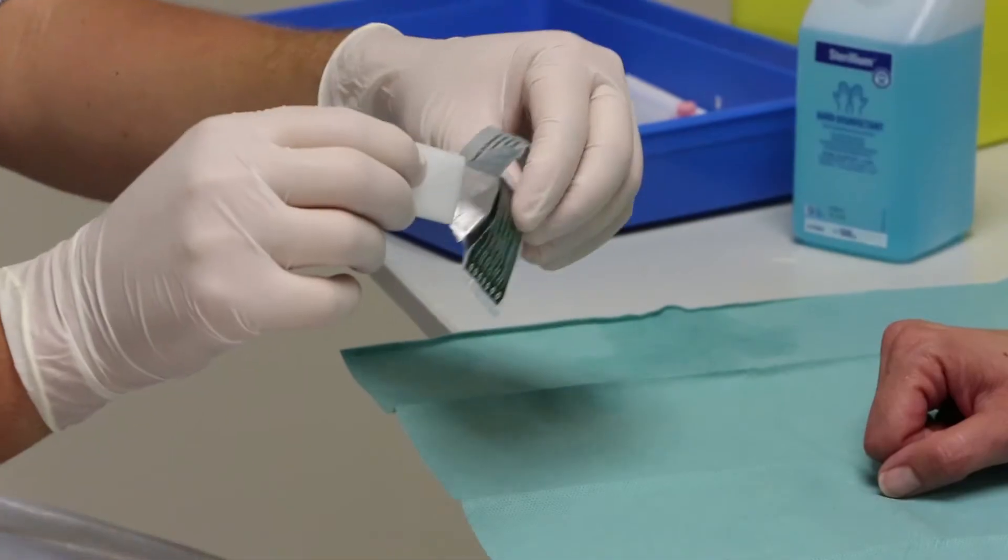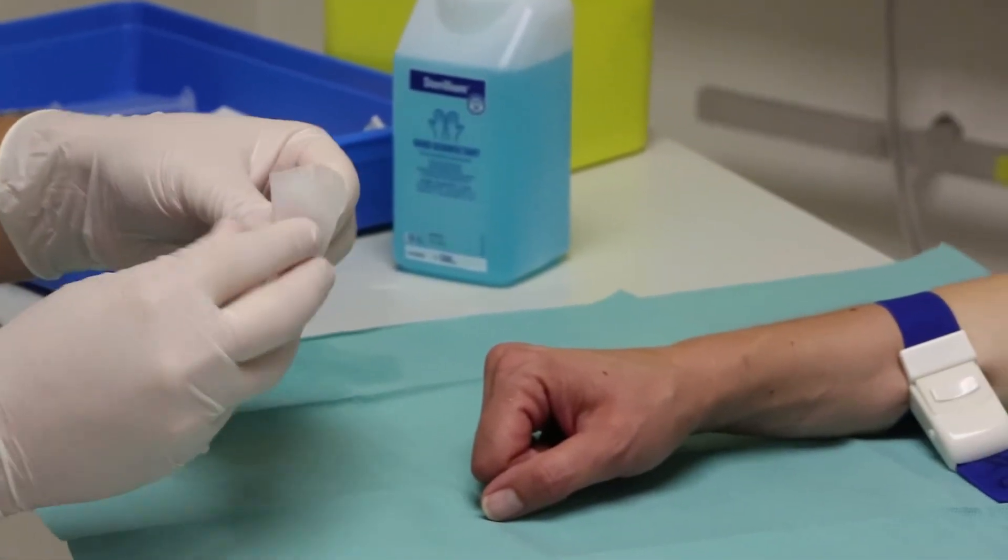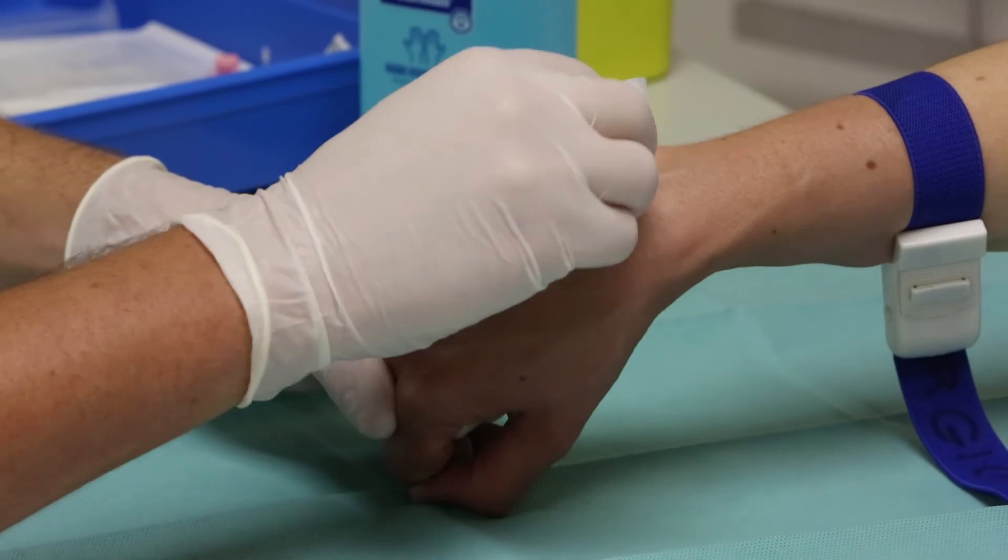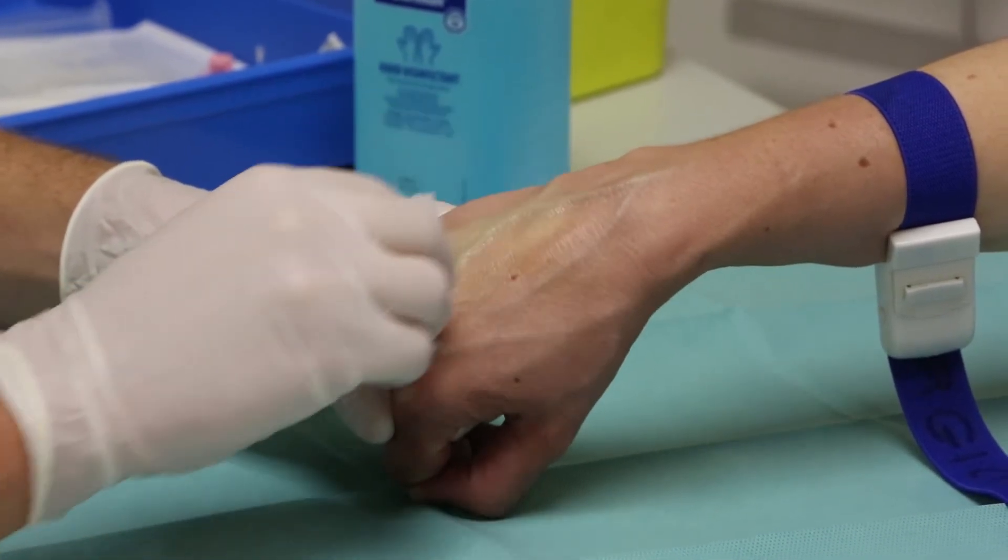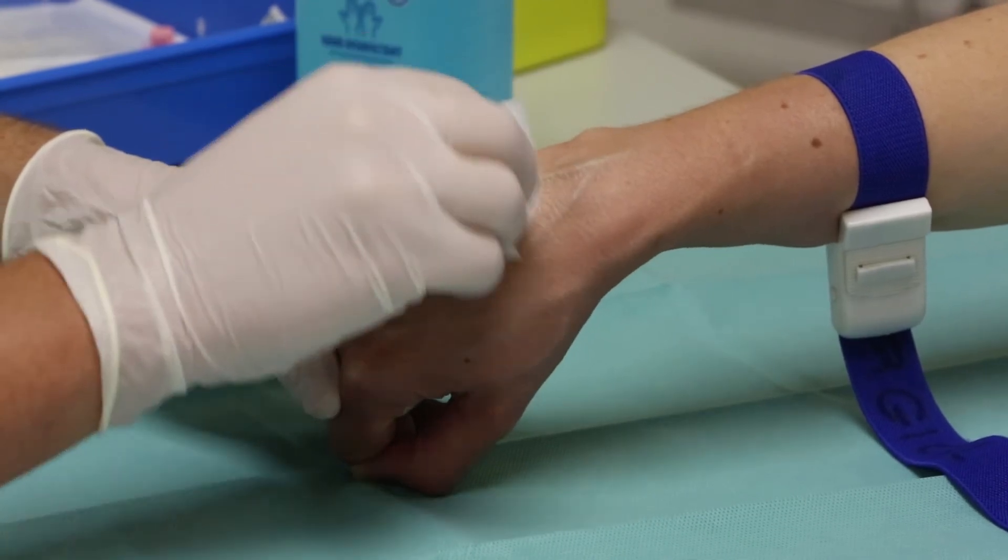Step 10. Press the applicator or swab containing 2% chlorhexidine and 70% alcohol against the skin using repeated up and down and back and forth strokes for 30 seconds. It is essential to let the skin dry completely.